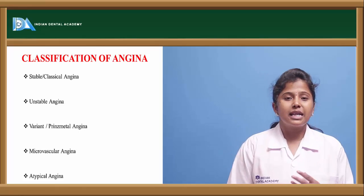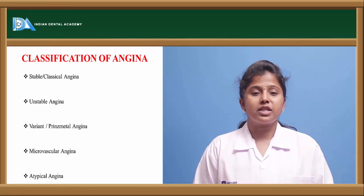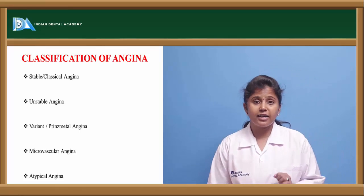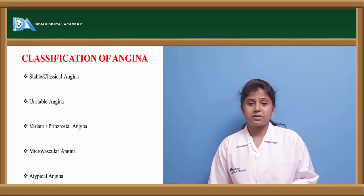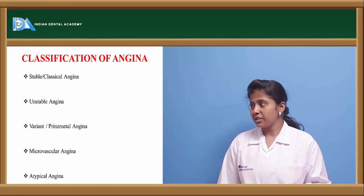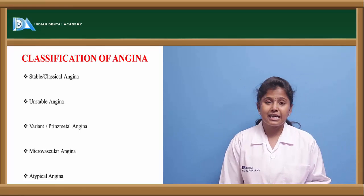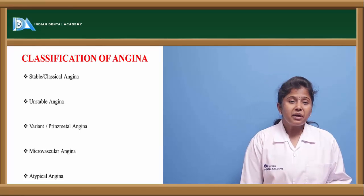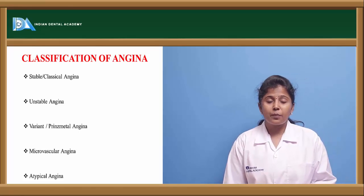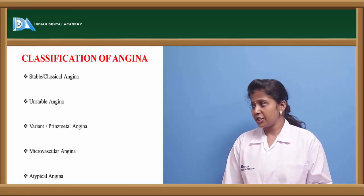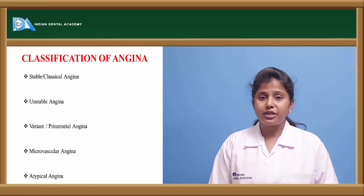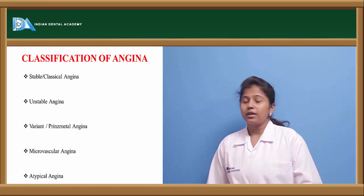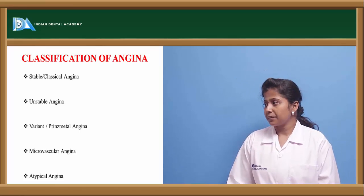Angina is classified into five types: stable angina or classical angina, unstable angina, atypical angina or Prinzmetal angina, microvascular angina, and variant angina.